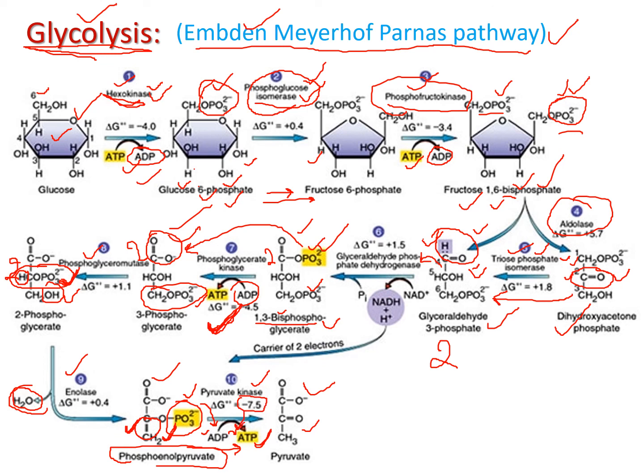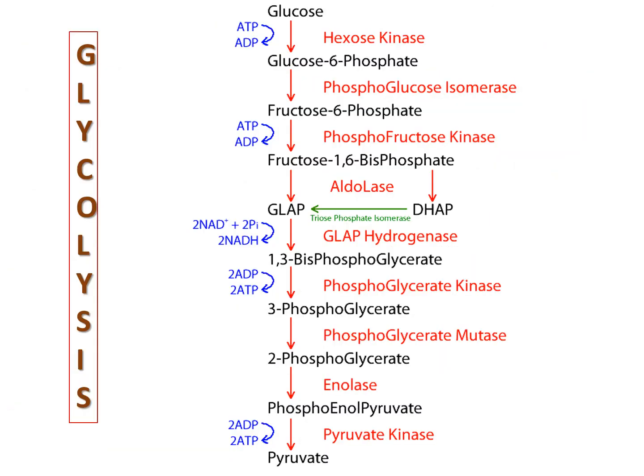The final product is pyruvate. This completes the glycolysis pathway, which shows the conversion of glucose to pyruvate through a 10-step process involving 10 enzymes. You can also refer to this summary diagram of the glycolysis cycle.